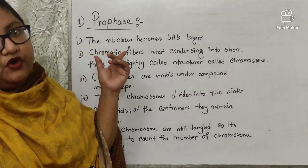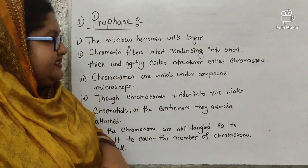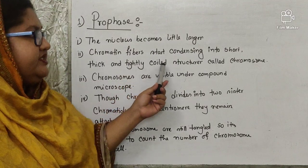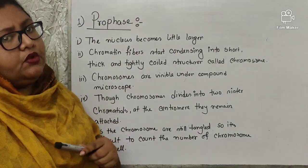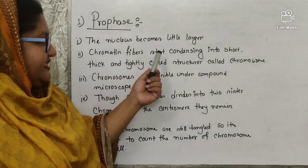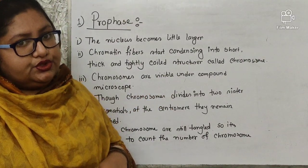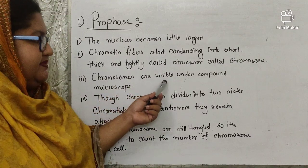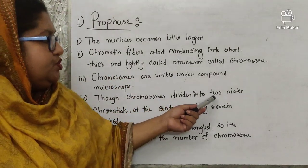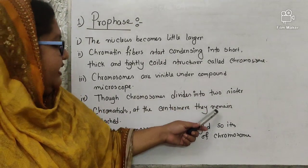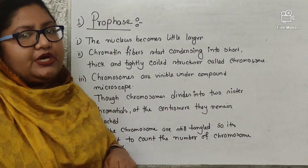Prophase: this is the first step of mitosis cell division. During this step, the nucleus becomes a little larger. Chromatin fibers start condensing into short, thick, tightly coiled structures called chromosomes, which become visible under a compound microscope. The chromosomes divide into two sister chromatids, but at the centromere they remain attached. As the chromosomes are still tangled, it is difficult to count their number.